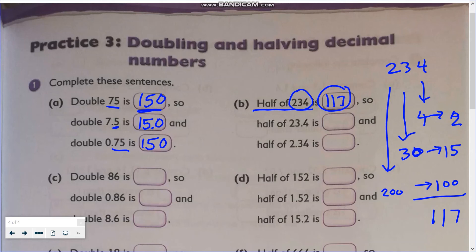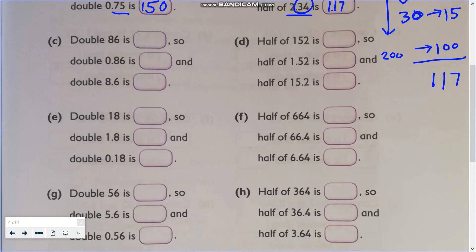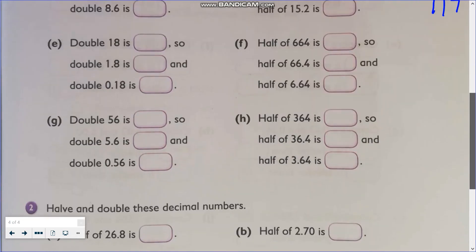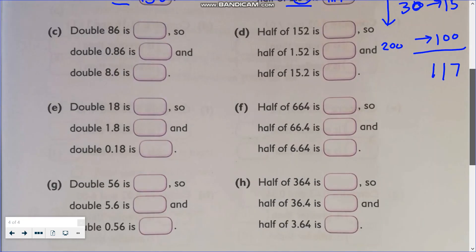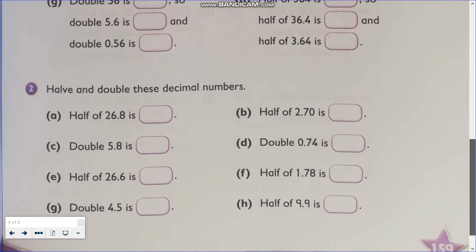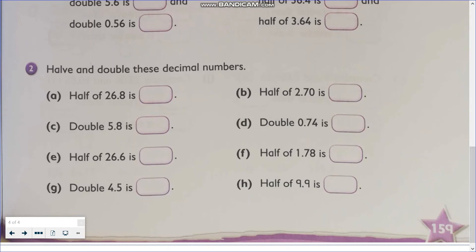Now for the second statement, half of 23.4: let's write the same answer, 117. You will see there is one decimal place, so put one decimal place — the decimal point goes after 1, giving 11.7. For 2.34 there are two decimal places, so write 117 and count two decimal places, giving 1.17. You just need to follow the pattern for letter C up to letter H. Read the statements carefully whether it is to double or to get the half. For number 2, halve and double the numbers using any of the methods taught.